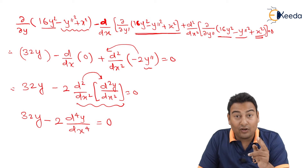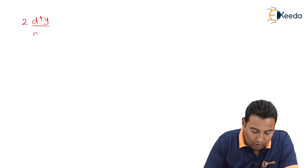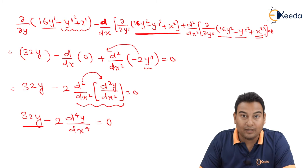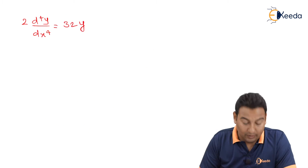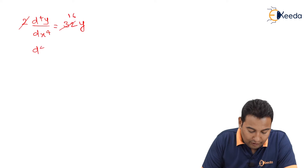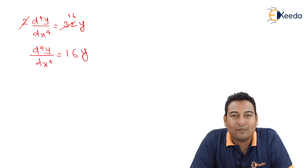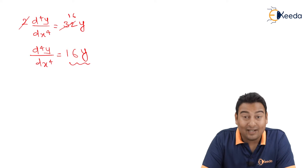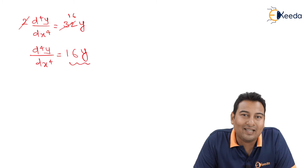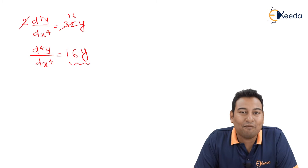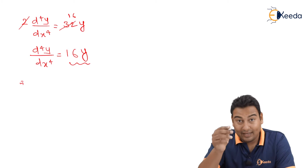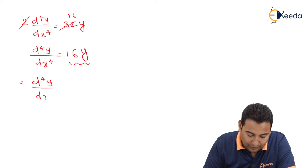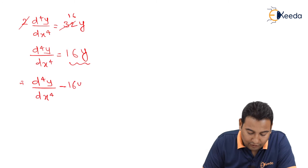Taking minus 2·d⁴y/dx⁴ to the other side gives plus 2·d⁴y/dx⁴ equal to 32y. Dividing both sides by 2 gives 16·d⁴y/dx⁴ equal to 16y. Rearranging: d⁴y/dx⁴ minus 16y equal to 0.